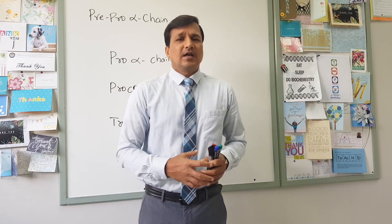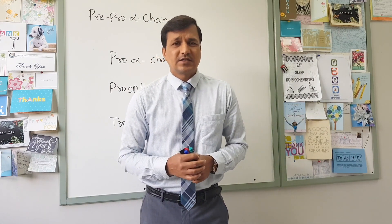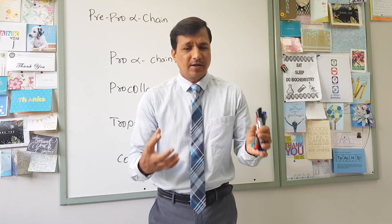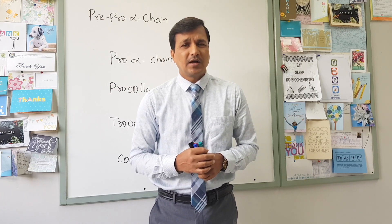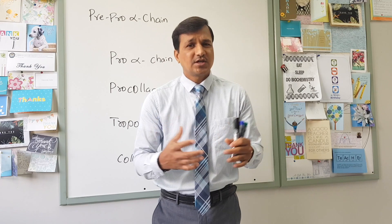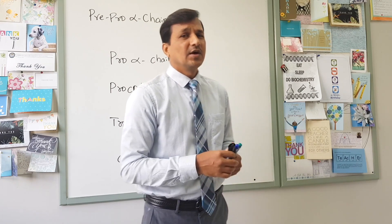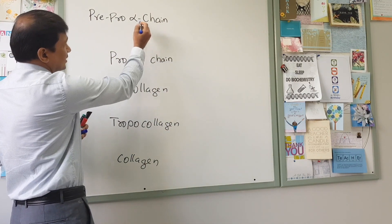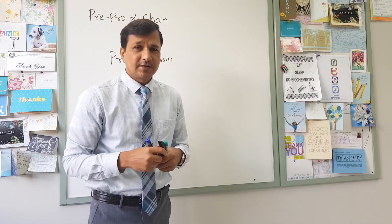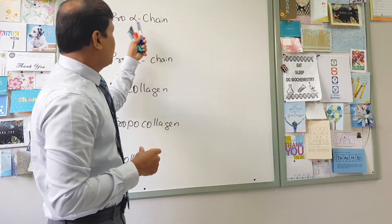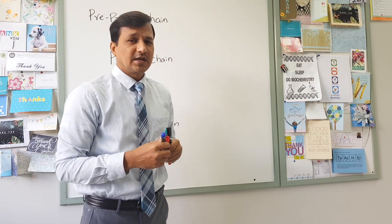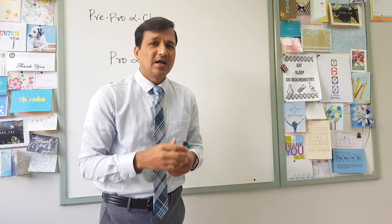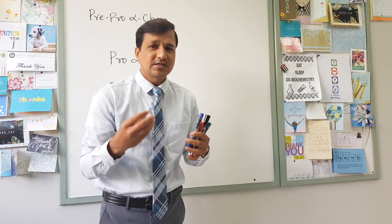Now let us see how exactly collagen is synthesized in our body. Collagen is synthesized over ribosomes present on the rough endoplasmic reticulum, and the alpha chain that is synthesized there is called the pre-pro-alpha chain. This pre-pro-alpha chain has a special amino acid sequence at the amino terminus referred to as a signal peptide or signal sequence.